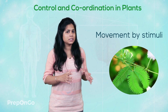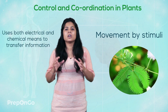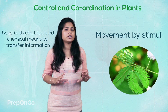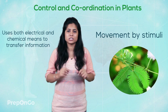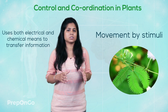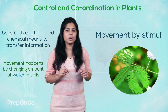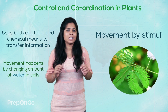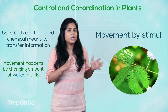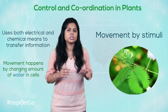The plant does this by sending electrical and chemical signals to convey information from cell to cell. They do not have any specific or specialized tissues to transfer this information to the leaves. Instead, these plant cells change the amount of water, resulting in the swelling and shrinking, thereby changing the shape of the cells. In this way, the plant changes and responds to the stimuli.